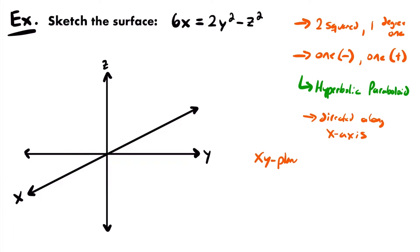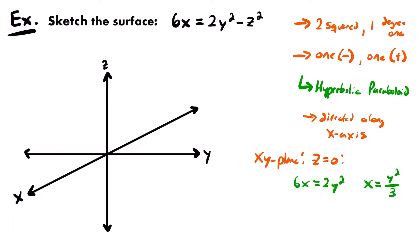Let's start with the xy-plane by setting z = 0. That gives 6x = 2y², and solving for x: x = y²/3. This is a parabola pointing in the positive x-direction with vertex at the origin, since there's no value added or subtracted from y². To find two points, let y = 3 and y = -3: 3² = 9, divided by 3 gives x = 3. So our two points are (3, 3, 0) and (3, -3, 0).